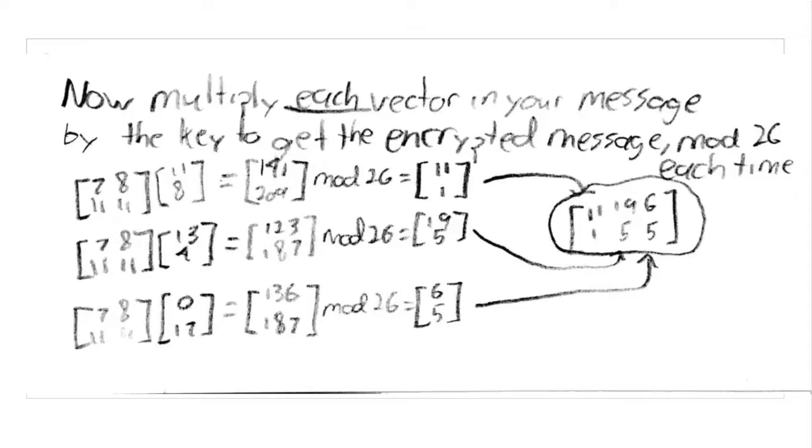The key is then multiplied by the individual columns of the 2-row matrix, and the modulo 26 operation is performed on each component, due to the 26 letters of the alphabet.